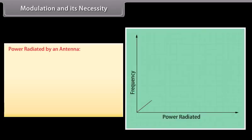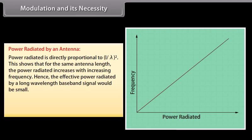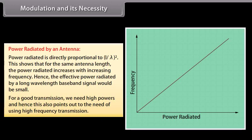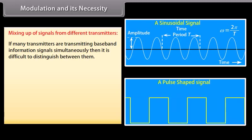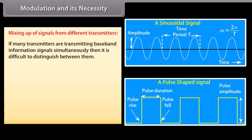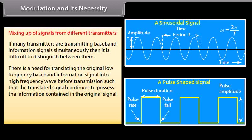Power radiated by an antenna is directly proportional to (L/λ)². This shows that for the same antenna length, the power radiated increases with increasing frequency. Hence, the effective power radiated by a long wavelength baseband signal would be small. For good transmission, we need high power, which also points to the need for high frequency transmission. If many transmitters are transmitting baseband information signals simultaneously, it is difficult to distinguish between them, necessitating translation to high frequency waves.